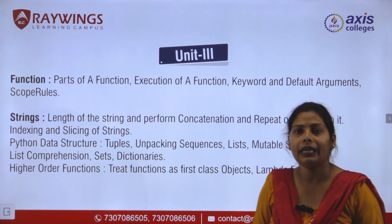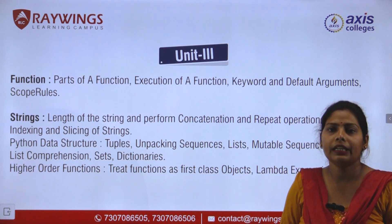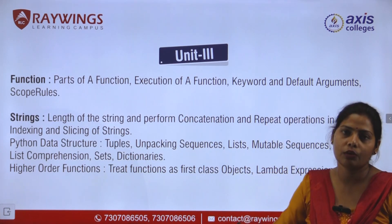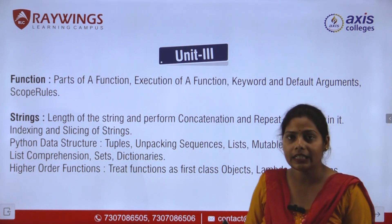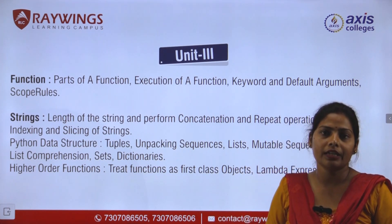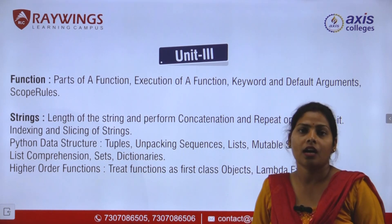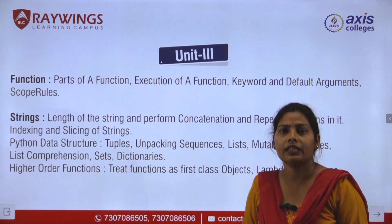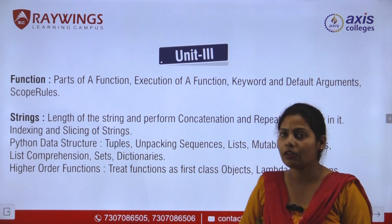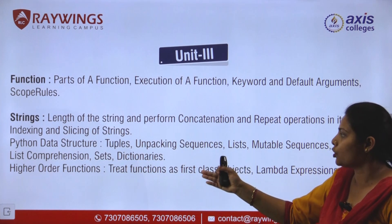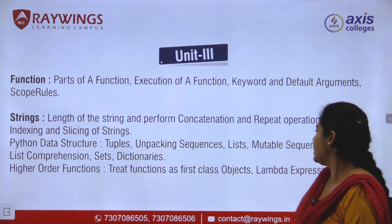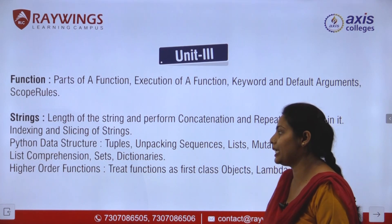Concatenation means appending two strings together. Repetition means printing a string multiple times as per the requirement. Slicing is working with a part of the string. Indexing is the order of the string — how to access any character in a string; without knowing indexing, we cannot perform slicing. Next, Python data structures: we will talk about tuples, unpacking sequences, lists, mutable sequences, list comprehension, sets, and dictionaries.